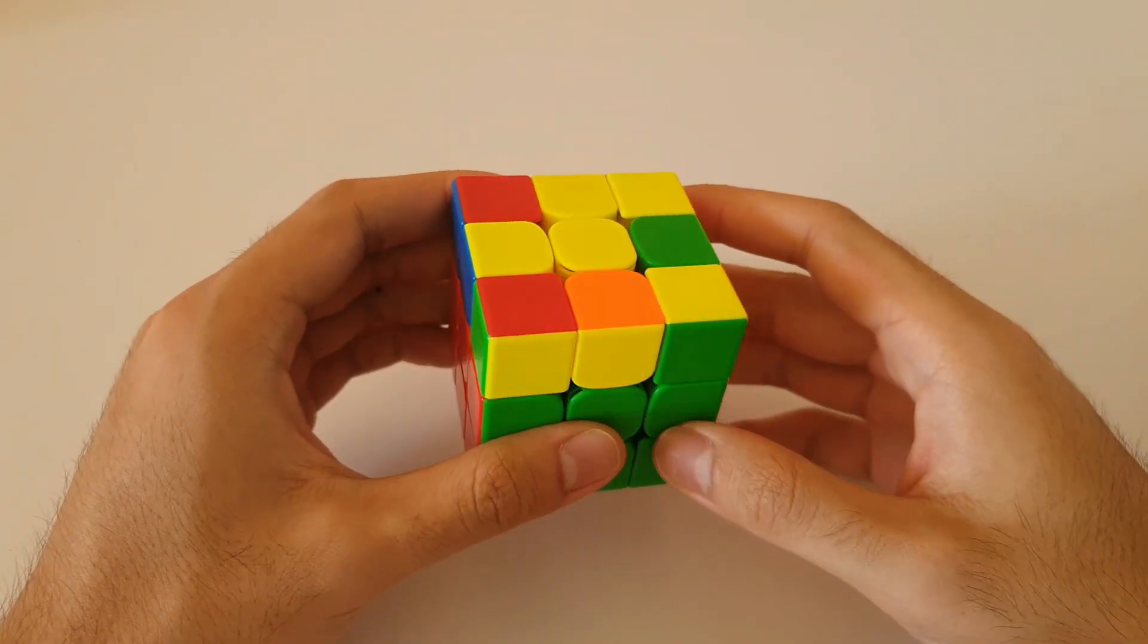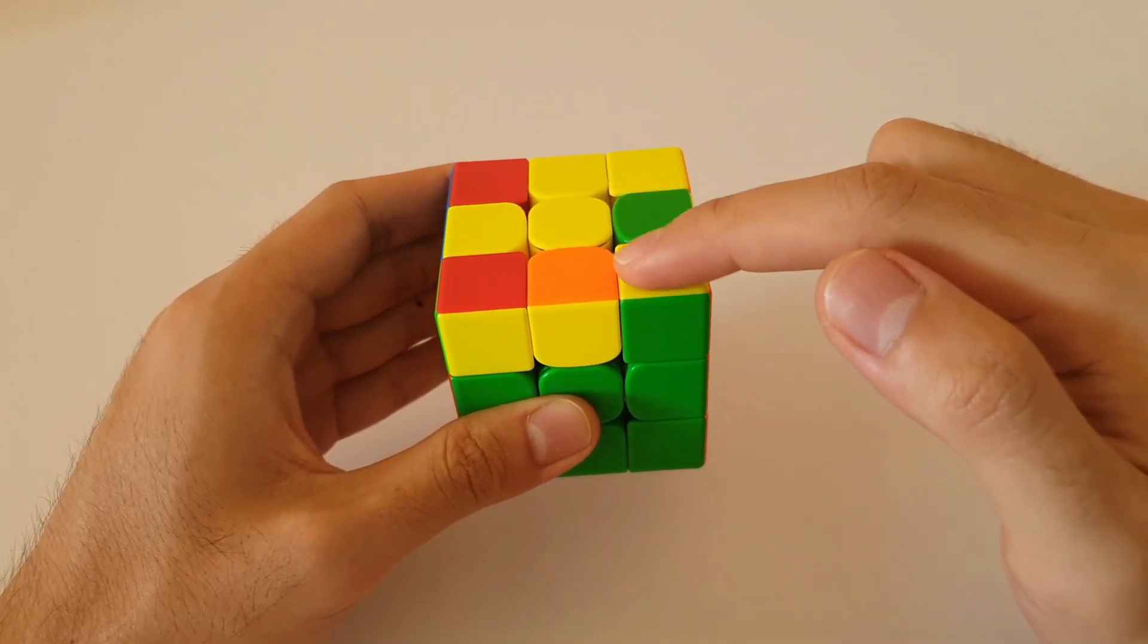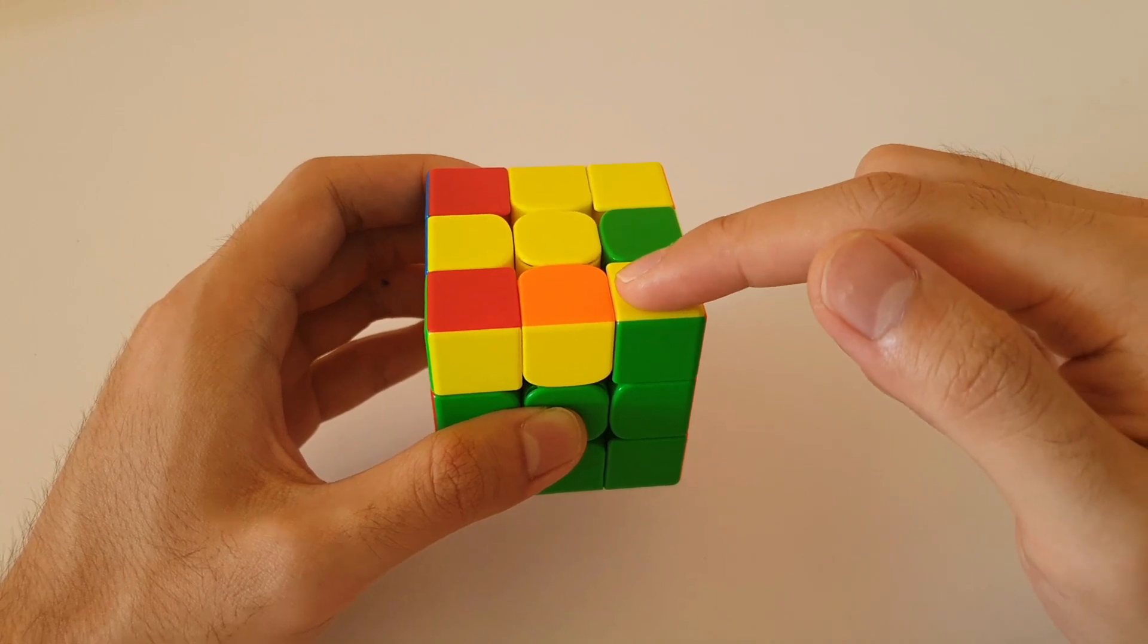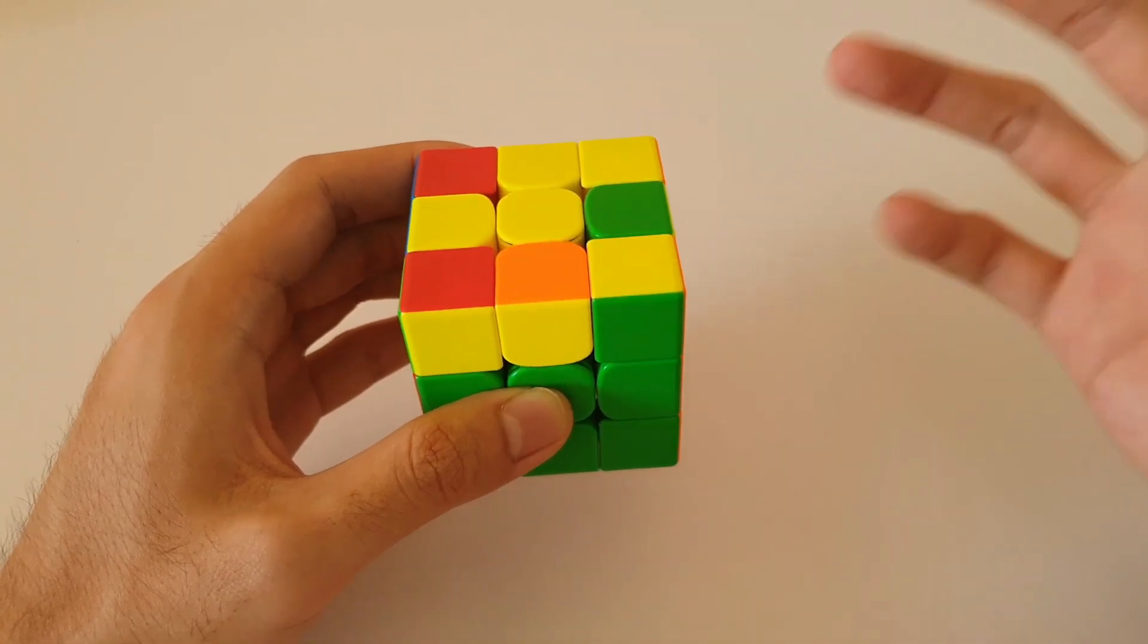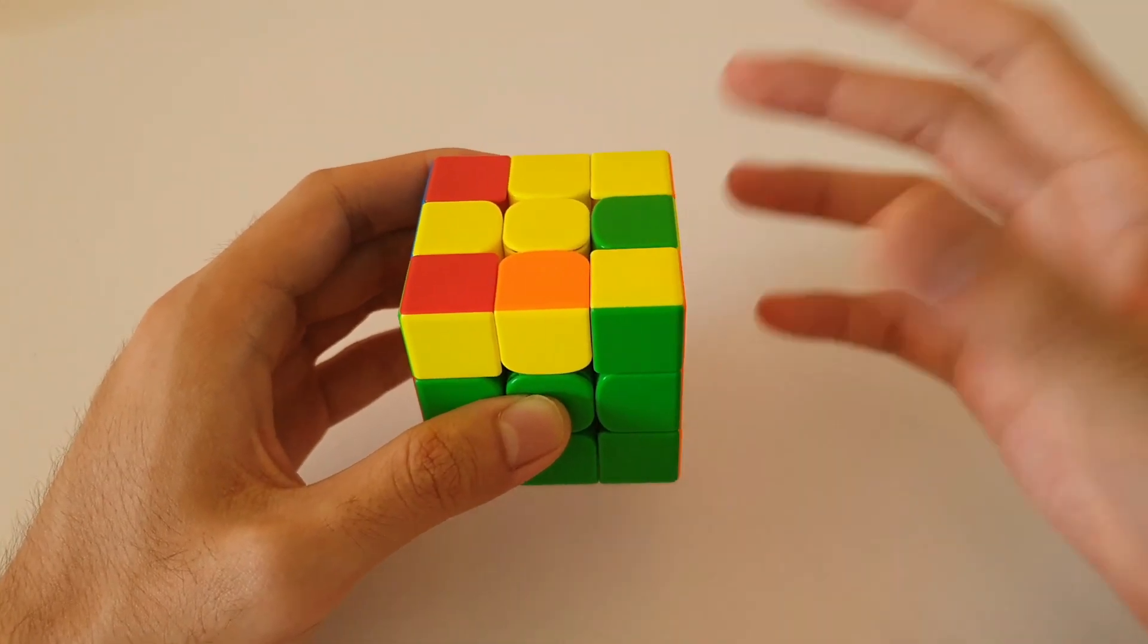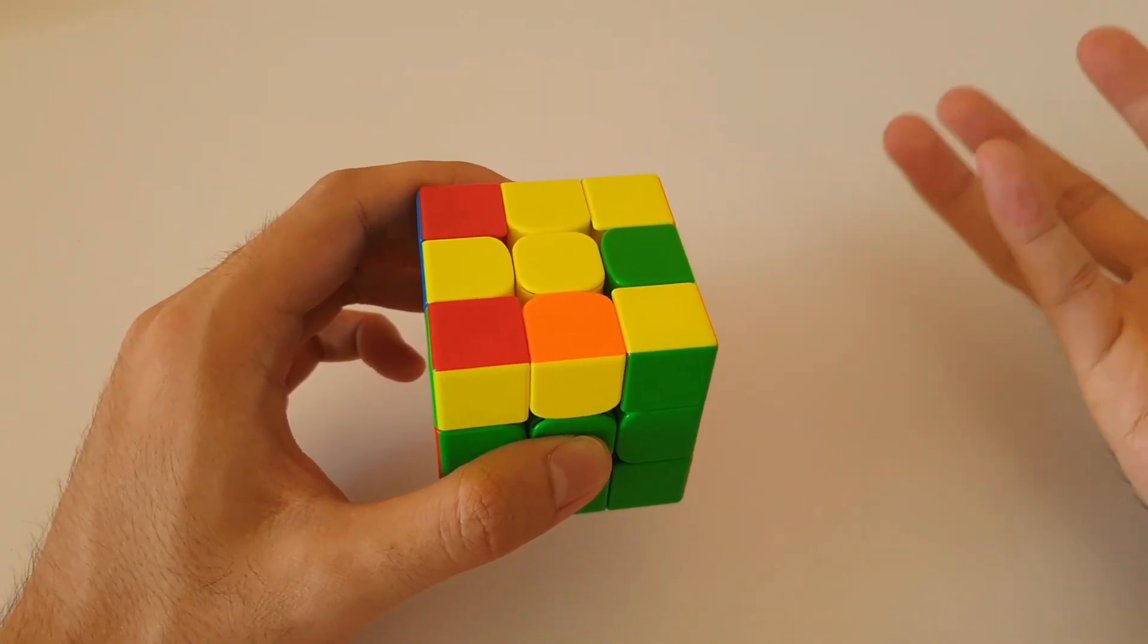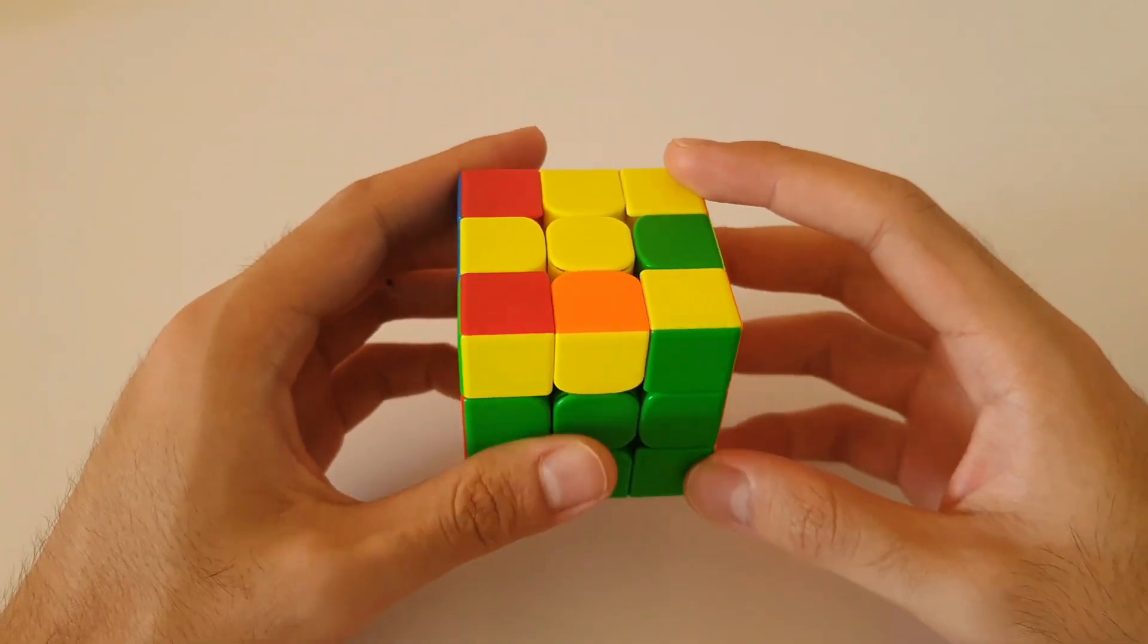So once again, we want to recognize the case by looking at where the single corner color is. So in this case, that single yellow corner color is on the front right, which you probably guessed, means that we're going to be using our right hand for this algorithm. So the algorithm is actually fairly straightforward to remember, especially if you break it up.